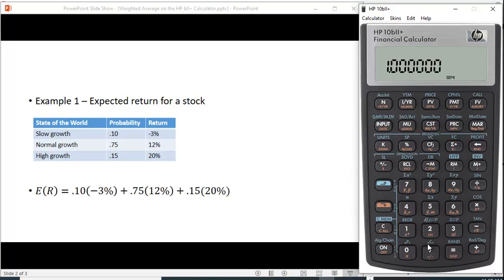The second observation would be 12%, input, and 75% chance that that happens, sigma plus. So now we have two observations. And then the final observation is 20%, input, and 0.15, sigma plus.